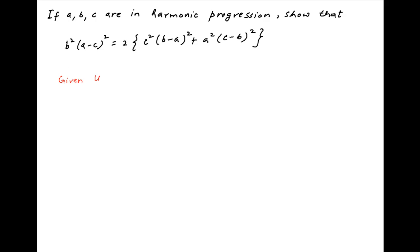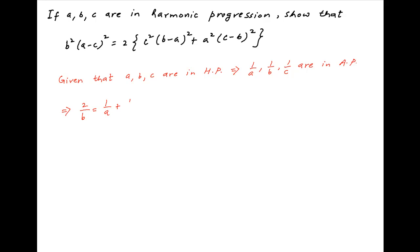We are given that a, b, and c are in harmonic progression. Therefore 1/a, 1/b, and 1/c are in arithmetic progression. It follows that 2/b = 1/a + 1/c. The right hand side equals (a + c)/(ac), and therefore b = 2ac/(a + c).